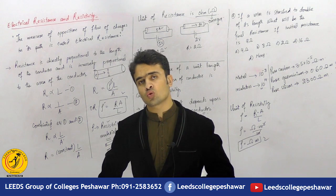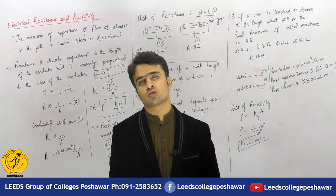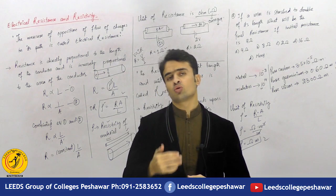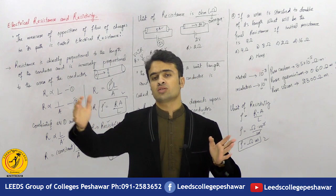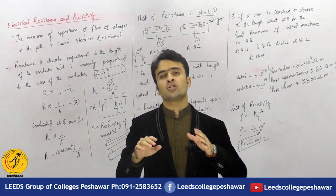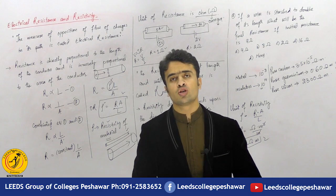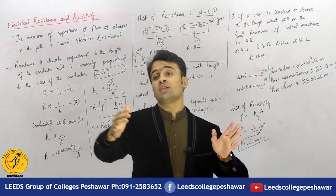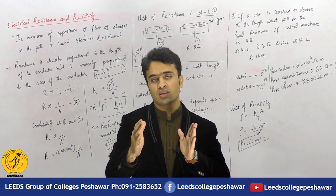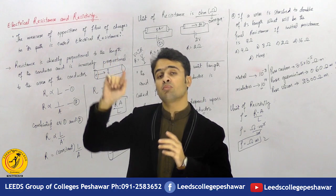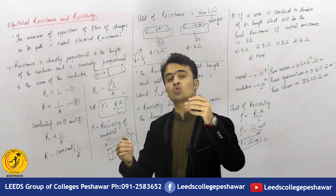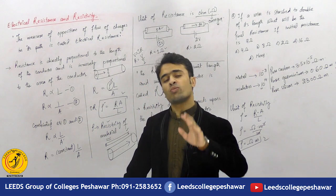Remember, resistance depends on the material and its dimensions. For example, for a given conductor, if the length is small, resistance is low; if the length is large, resistance is high. Two different materials can have the same resistance if their dimensions differ appropriately. Resistance is low in a good conductor — one with small length gives less resistance, but same conductor with greater length gives more resistance.